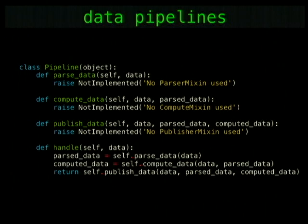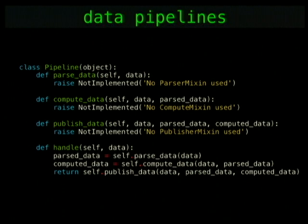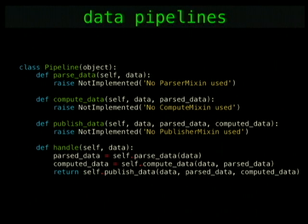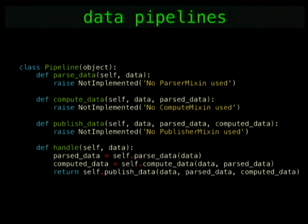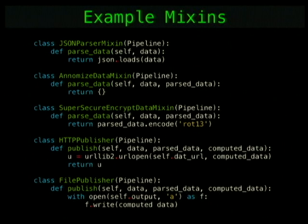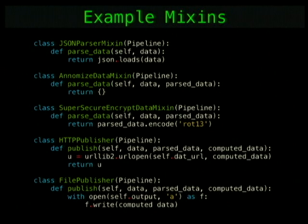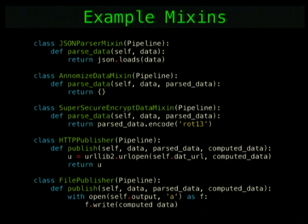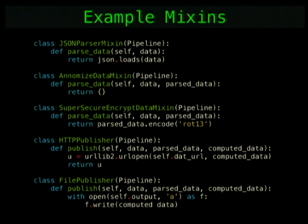In the backend we modeled composable pipelines. The idea was certain stages the data goes through: a parsing stage, a computation stage, and a publish stage. This is a toy example — whenever we get a message in, we call the handle function in its own greenlet. There were a bunch of NotImplemented exceptions, handled by mix-ins for each stage: a JSON parser, anonymization returning empty data, 'super secure encryption' by ROT13, or publishing to a file or HTTP endpoint.